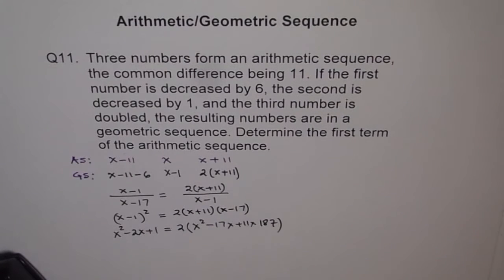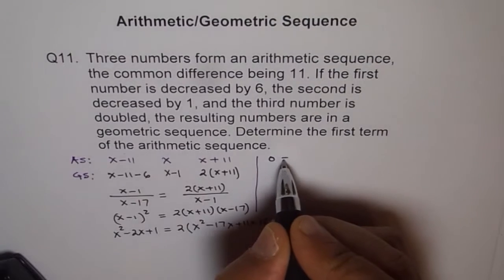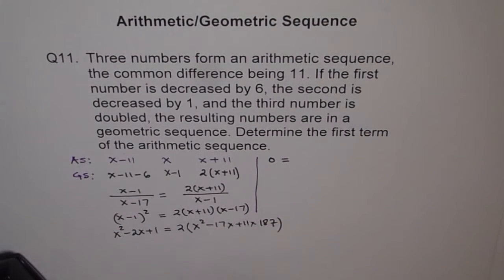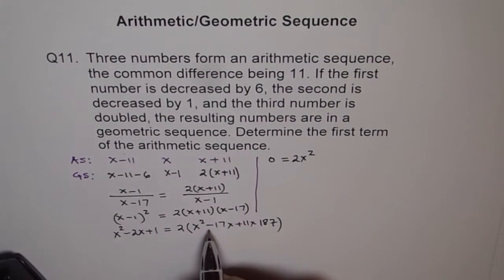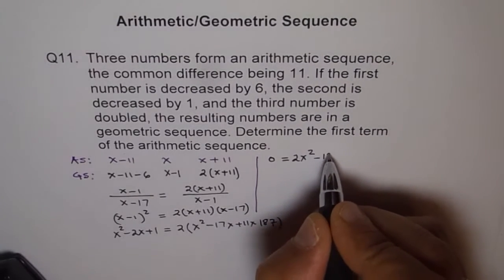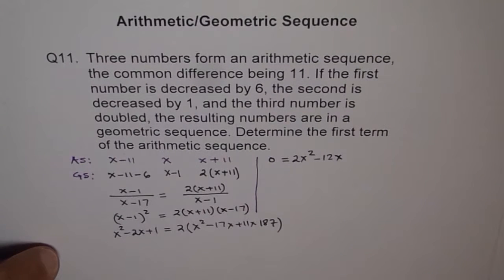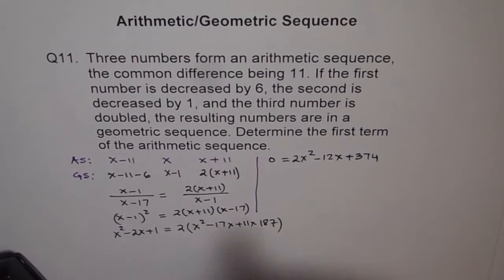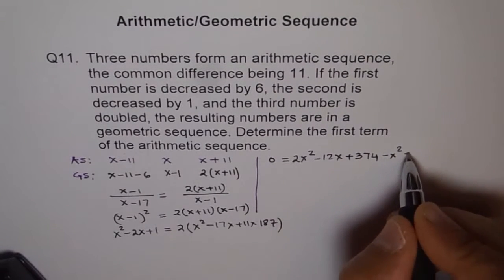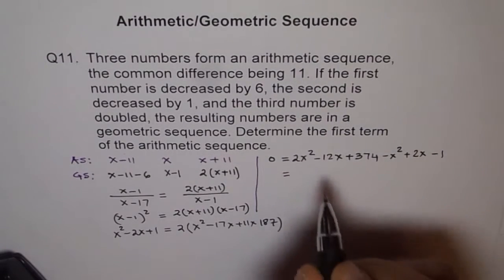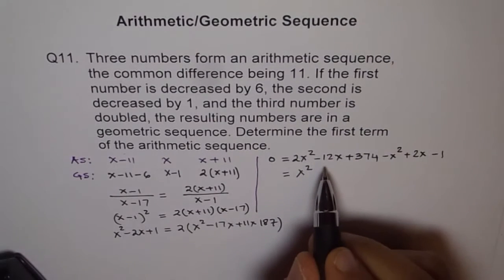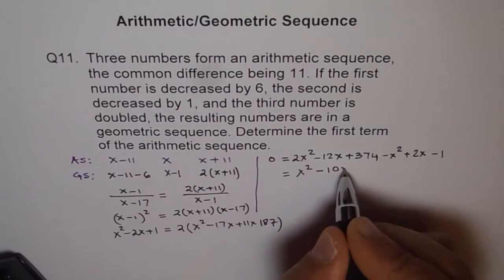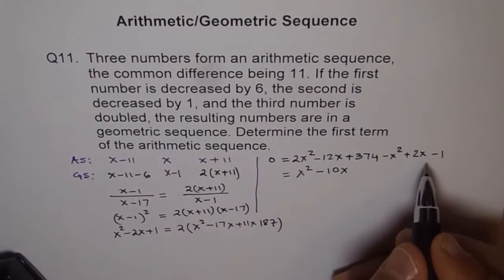Well, let me write these terms here. And I will bring all the terms on one side. So I will write 0 equals to, so I am expanding this, 2 times x square. 17 minus and 11 plus will give me minus 6 and times 2 will give me minus 12, right? And 187 times 2, let me do that, 374. I am bringing these terms on the right. So minus x square plus 2x minus 1. So we get 0 equals to 2x square minus x square is x square, minus 12x plus 2x is minus 10x and 374 minus 1 will be 373.